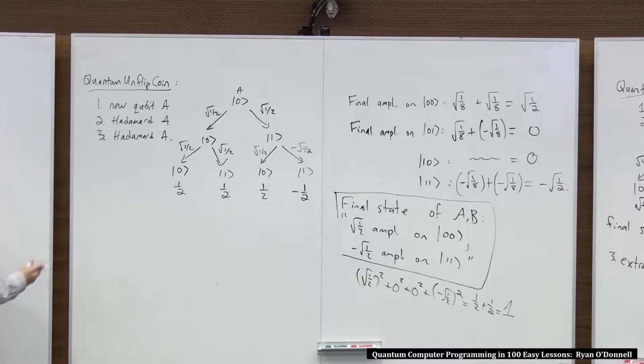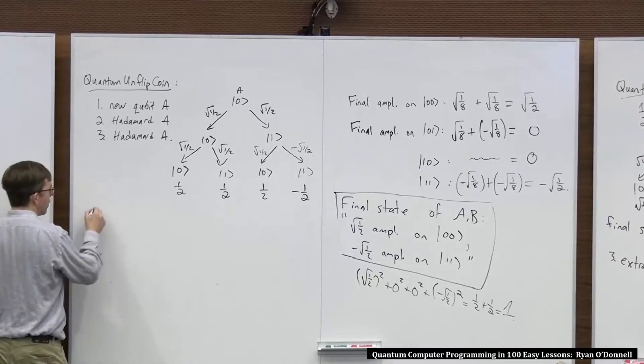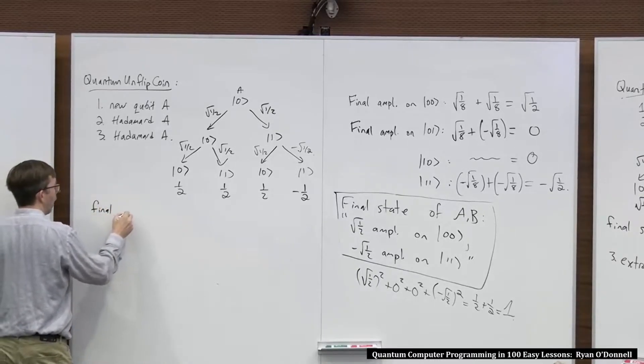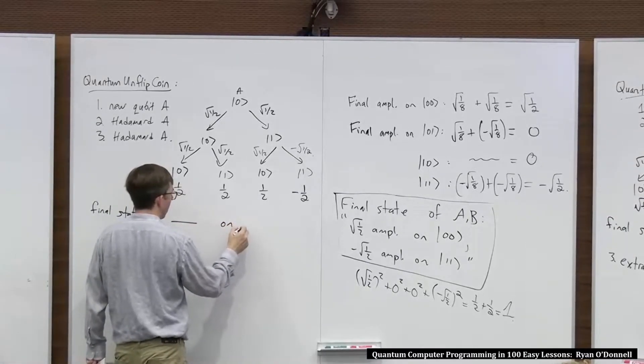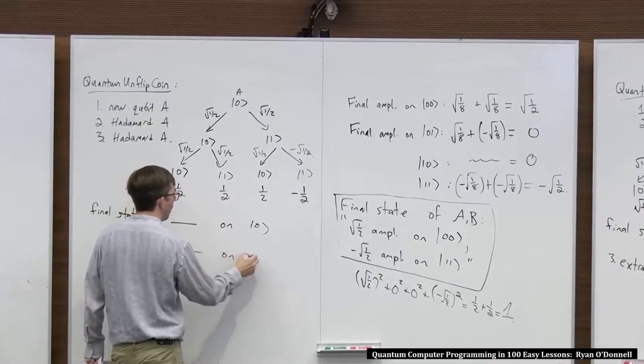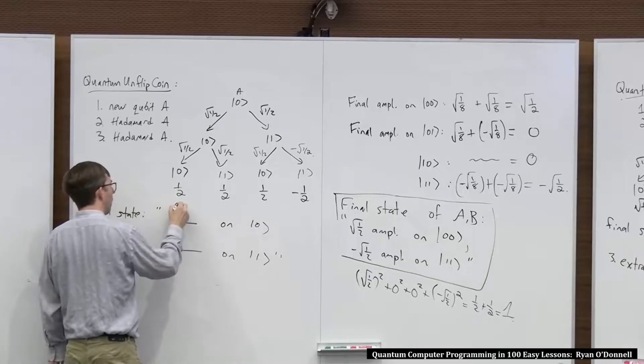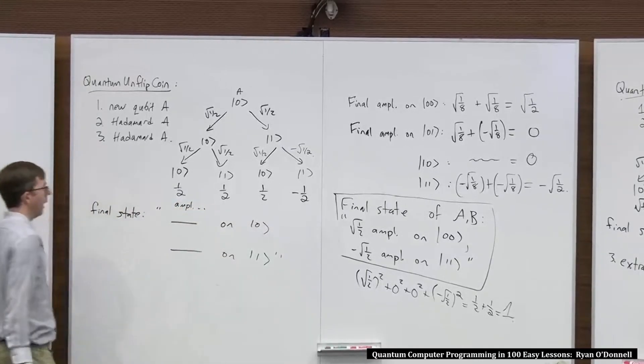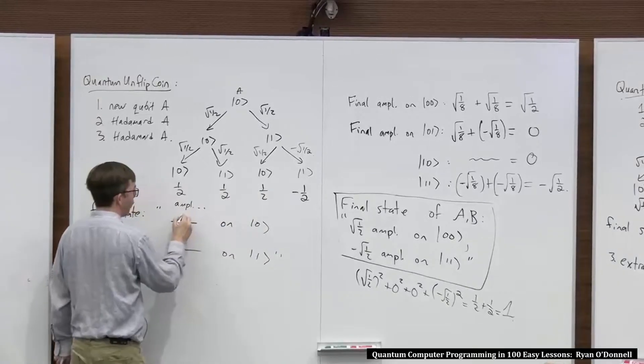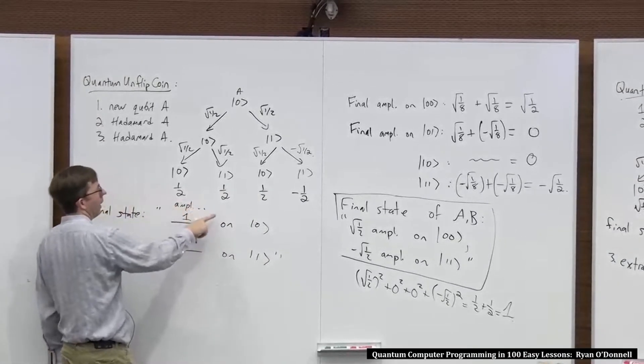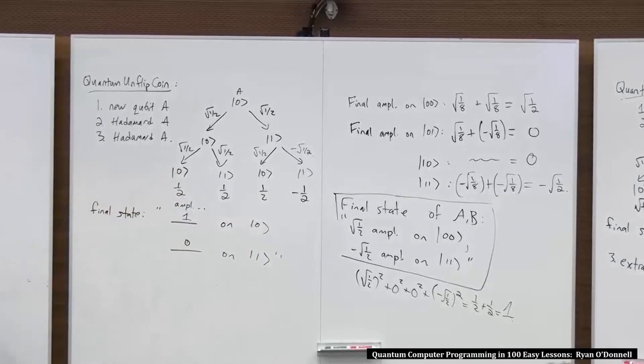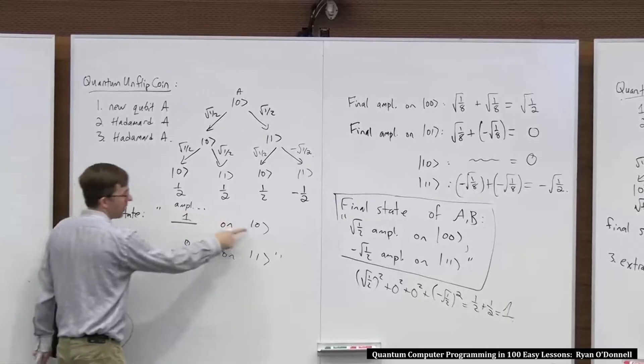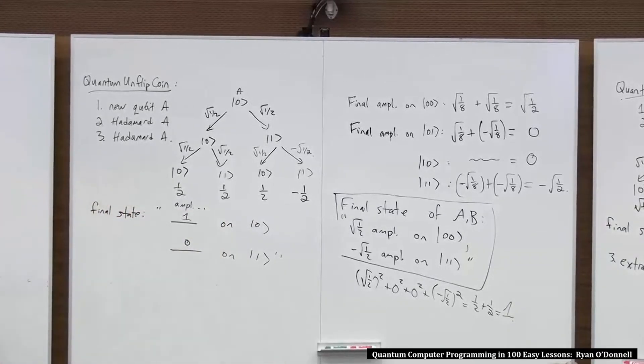We're still not finally done because we've got to now do the collation. So the final state, it has some amplitude on zero and some amplitude on one. And how much is on zero? We've got a half plus a half, so that's one. And how much amplitude on one? We've got half plus negative a half, which is zero. Remember, this is like an amplitude, a number. This is like the basic value.